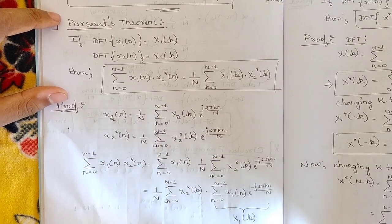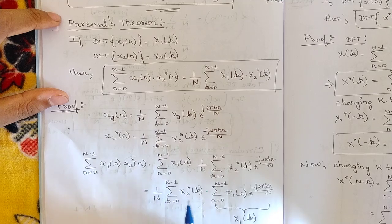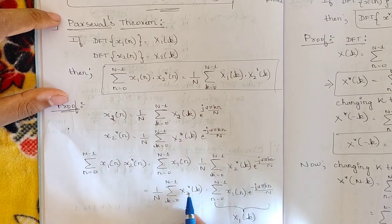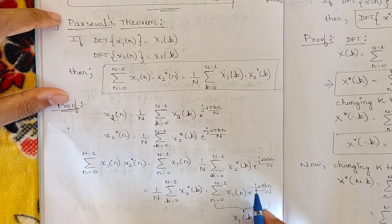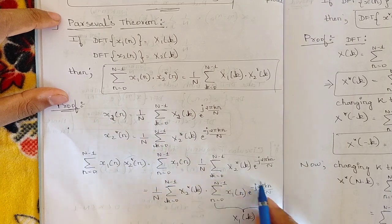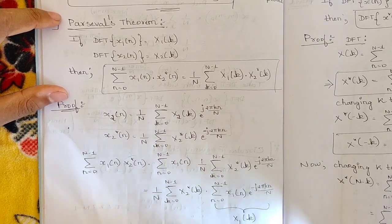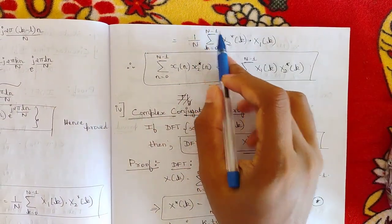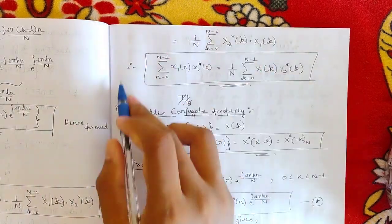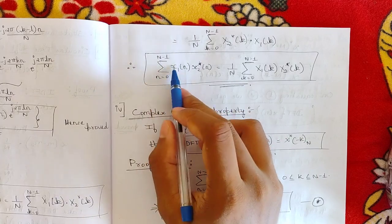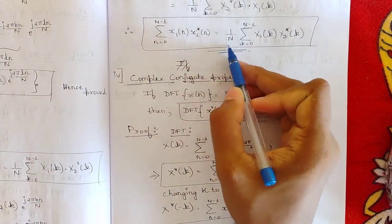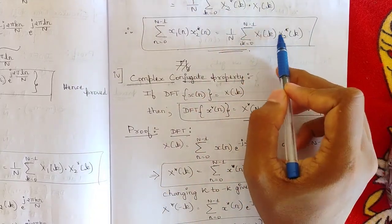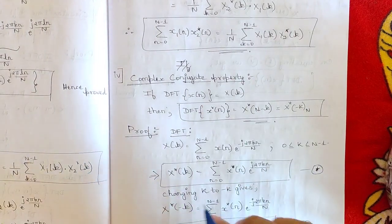Now consider the left-hand side: summation from n = 0 to N-1 of x₁(n) · x₂*(n). Substitute the value of x₂*(n): = summation of x₁(n) · (1/N) · summation from k = 0 to N-1 of X₂*(k) · e^(-j2πkn/N). Rearranging: (1/N) · summation of X₂*(k) · [summation of x₁(n) · e^(-j2πkn/N)]. The inner sum is exactly X₁(k). Therefore = (1/N) · summation from k = 0 to N-1 of X₁(k) · X₂*(k). Hence proved.